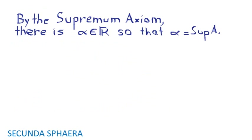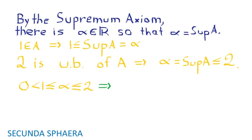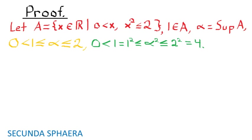Two direct consequences from alpha being the supremum of A: since 1 is in A, 1 must be less than or equal to the supremum of A, which equals alpha. Also, since 2 is an upper bound of A, the supremum of A must be less than or equal to 2. Therefore 0 is less than 1, which is less than or equal to alpha, which is less than or equal to 2. This inequality implies that 1 is less than or equal to alpha squared, which is less than or equal to 4. The aim of the proof is now to show that alpha squared equals 2.